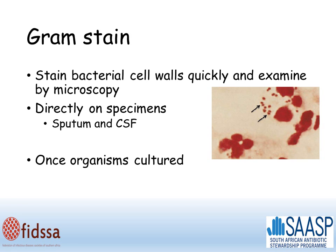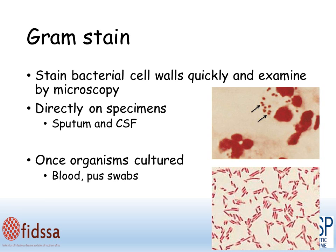Gram stain can also be performed once the organisms have been cultured — for instance when a blood culture becomes positive, or a pus swab has been cultured onto a plate. The first thing that will be done is a gram stain. This is an example of gram-negative bacilli, which can help guide empiric therapy.